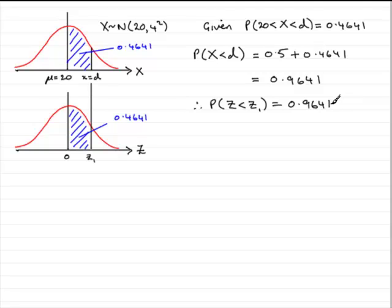And what we can do now is look this value up in the tables. So what you need to do is in your tables, you need to look up the probability of z being less than some particular value z. You need to look up 0.9641. So when you look up 0.9641, you should see that the z value to the left of it says 1.80.